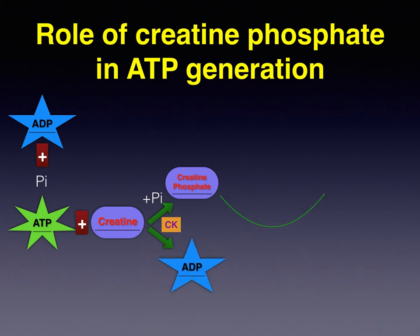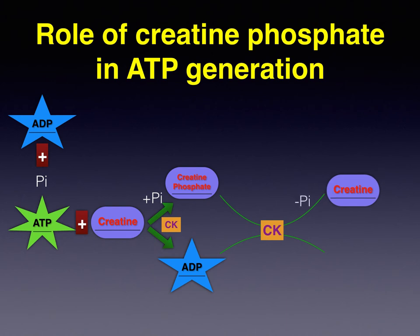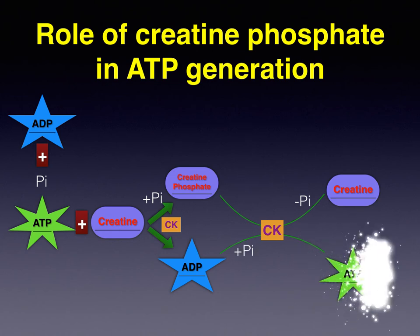For muscles to contract, they need high levels of ATP. Here, creatine kinase catalyzes the transfer of the high-energy phosphate group from creatine phosphate back to ADP. This direct phosphorylation generates new ATP molecules quickly.